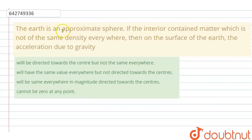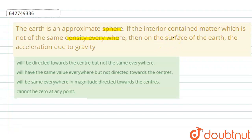The question is: the Earth is an approximate sphere, and the interior contains matter which is not of the same density everywhere. Then on the surface of the Earth, what will the acceleration due to gravity be?